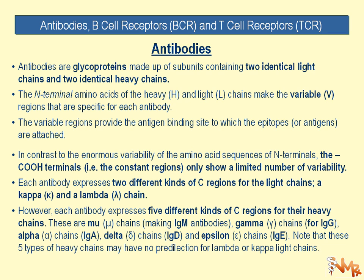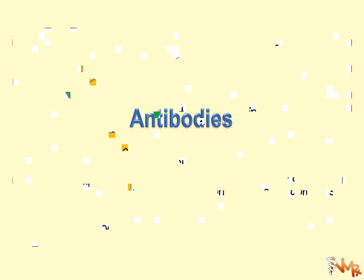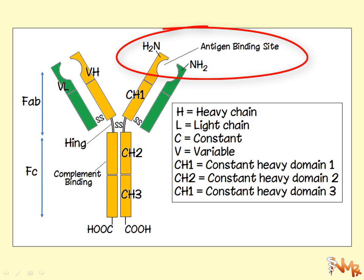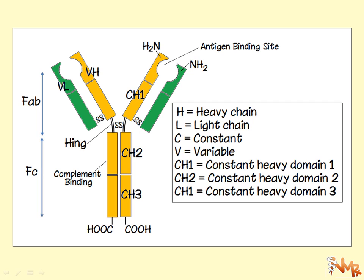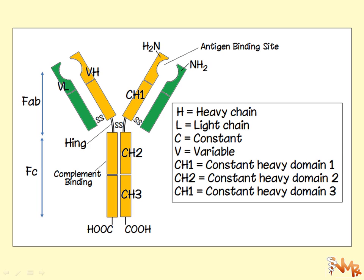Each antibody expresses two kinds of constant regions for the light chains — a kappa and a lambda chain. However, each antibody expresses five different kinds of constant regions for their heavy chains: mu chains (which make IgM), gamma chains (IgG), alpha chains (IgA), delta chains (IgD), and epsilon chains (IgE). Note that these five types of heavy chains have no predilection for lambda or kappa light chains. The antigen-binding site is at the N-terminal, with each of the two binding sites having one variable light and one variable heavy component.